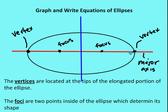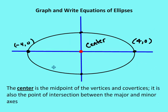The vertices are located at the tips of the elongated portion of the ellipse, and the foci are the two points inside the ellipse which determine its shape. The center is the midpoint of the vertices and the co-vertices. So if you find the midpoint between the two vertices, you'd find the coordinates for the center. It's also the point of intersection between the major and minor axes.